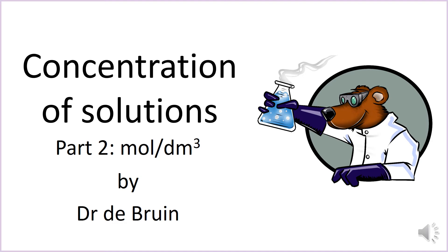This is a tutorial video for unit 3 of AQA GCSE chemistry, the quantitative chemistry unit. In the previous video we introduced qualitative descriptions of concentration and calculations involving masses. In this next video we're exploring calculations where the units of concentration are moles per decimetre cubed, and it's important that you master these before you can move on to titration.